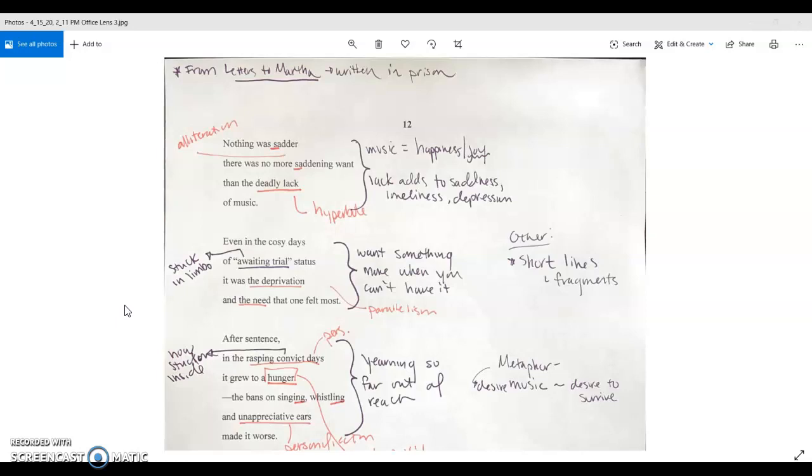I'm going to go over poem 12 by Dennis Brutus. At the top I made note that this is from the Letters to Martha collection. As I stated in the activity, these numbered poems were written while he was in prison, and he had them all together and titled it Letters to Martha so he could smuggle them out.